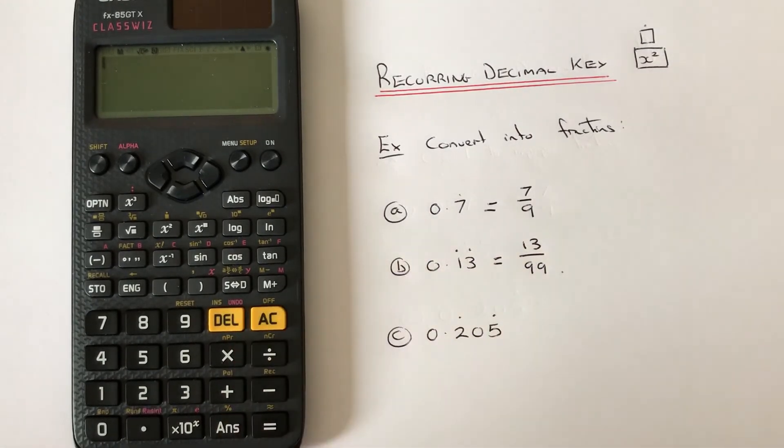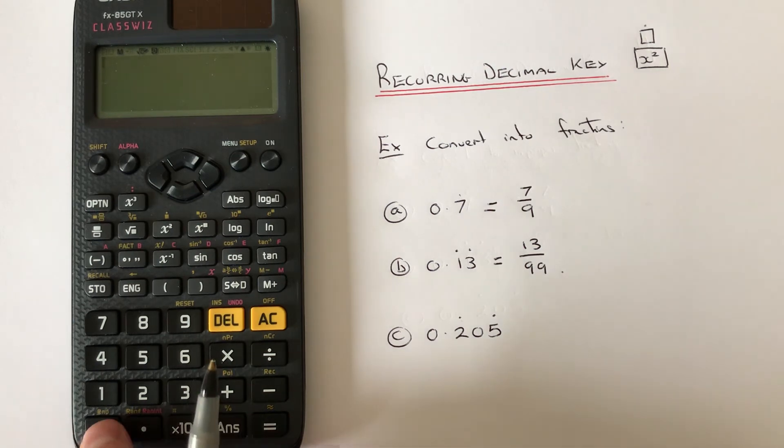To do this one, we go 0 point, shift recurring decimal, then press the 2. Then we forget about the 0 in the middle now and we'll come back to that in a minute.